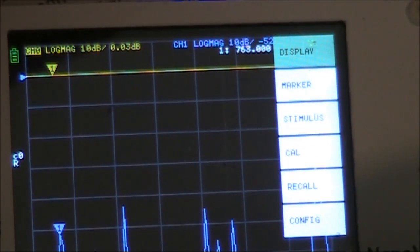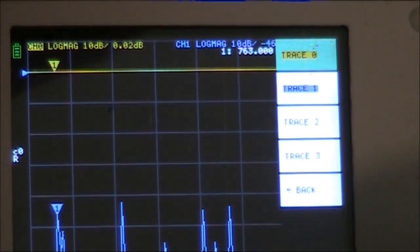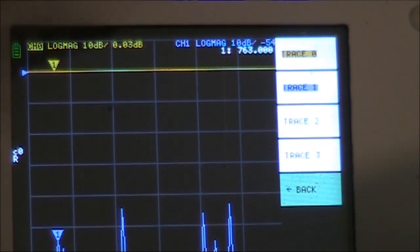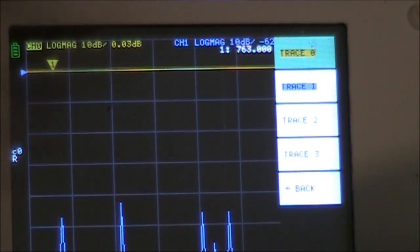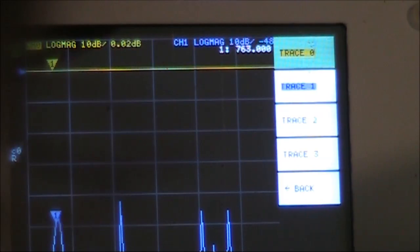So that your screen is uncluttered, you need to remove some of the traces from the display. In this case, I've removed trace 2 and 3. You can do that under the trace tab.